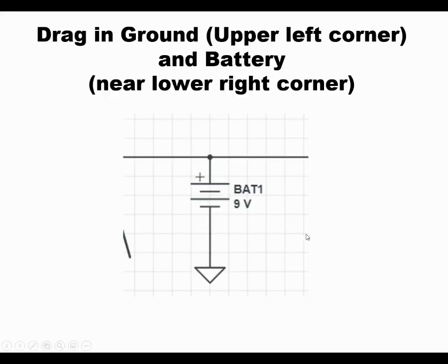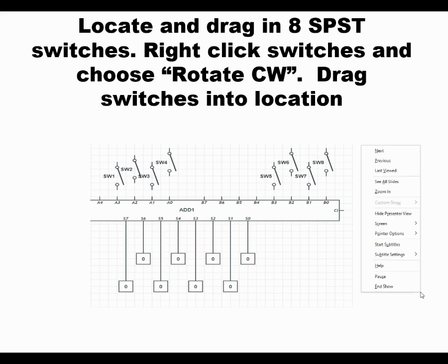Drag them all in one at a time, click on them, right click on them, rotate them, and you want to drag them over. So four of them are over by B0 to B3 along the top of the adder.